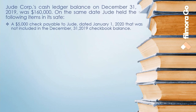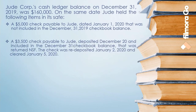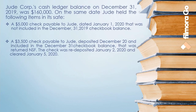Next: a $3,500 check payable to Jude, deposited on December 20 and included in the December 31 checkbook balance, was returned NSF. The check was redeposited on January 2, 2020 and cleared January 5, 2020. In this transaction, the $3,500 was recorded in Jude's books; however, there were insufficient funds when the check was deposited. As a result, Jude's cash balance per book was overstated, so you need to reverse the entry previously made to correct the balance. If the check had been redeposited on or before December 31, 2019 and cleared, no adjustment would be necessary.